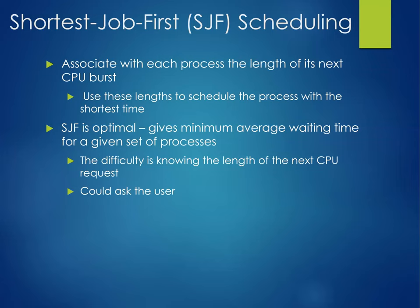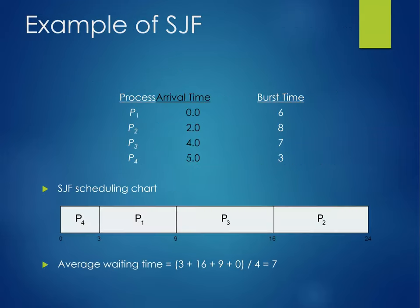Shortest job first is optimal — it gives minimum average waiting time for a given set of processes. However, the difficulty is knowing the length of the next CPU request. You could ask the user, but that's not going to work all that well. In this example, P4 would go first, P1 second, P3 next, and finally P2. The average waiting time is (3 + 16 + 9 + 0) / 4 = 7.